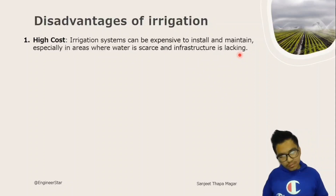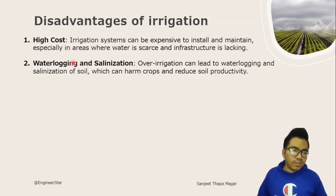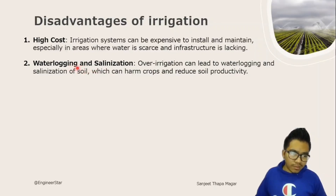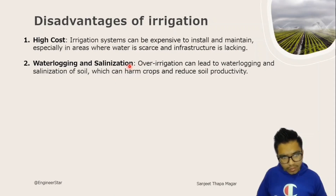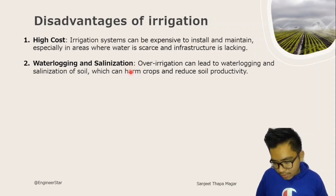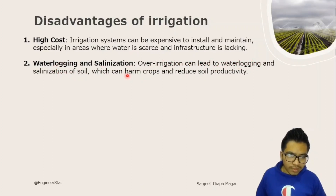Waterlogging and salinization are significant disadvantages. Over-irrigation can lead to waterlogging and salinization of the soil, which can harm crops and reduce soil productivity.